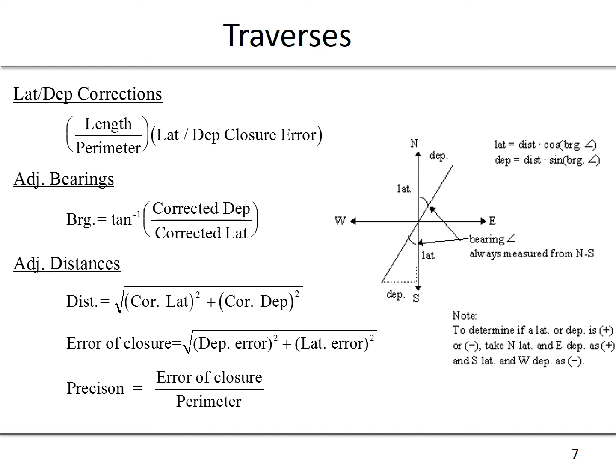The departure, which is the east-west component of the line, is the distance multiplied by the sine of the bearing. We can get the distance by squaring the latitude and departure and then taking the square root of those sums. This really summarizes the use of simple traverses in a highway alignment context.